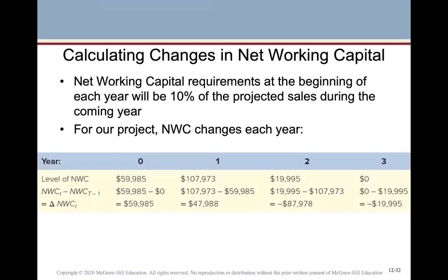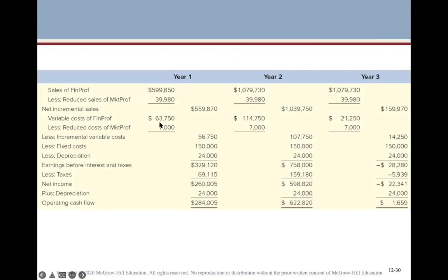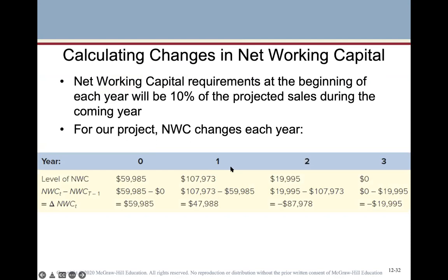That $2,630 will be a positive cash flow at the end of the project. For changes in net working capital: the requirement is 10% of projected sales during the coming year. Required net working capital at time zero is $59,985, based on year one sales. In year one, net working capital is based on 10% of year two's sales; year two is based on 10% of year three's sales. We net out the previous year's working capital from the prior year.